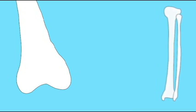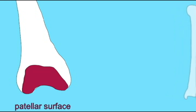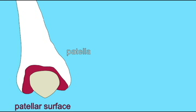As we consider the bones which compose the knee, let's begin with the femur, which on its anterior surface has a patellar surface that allows the articulation of a sesamoid bone known as the patella, which is located within the patellar tendon.